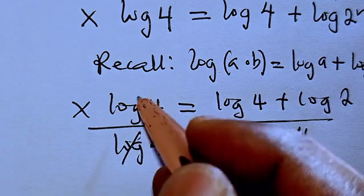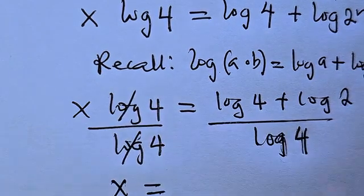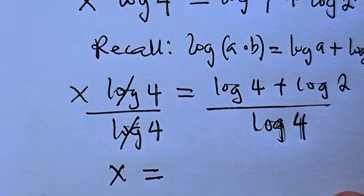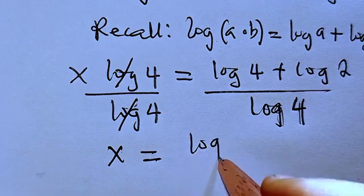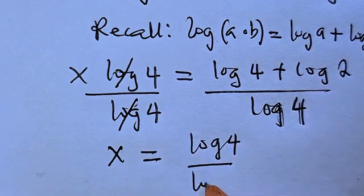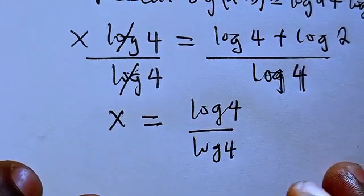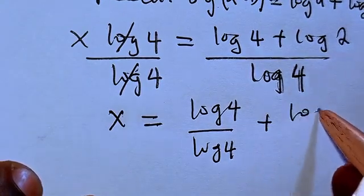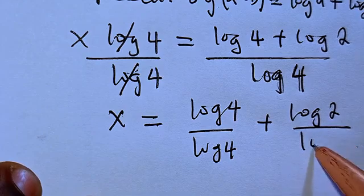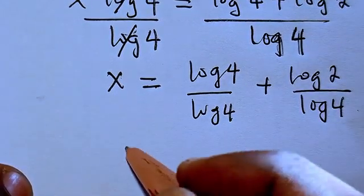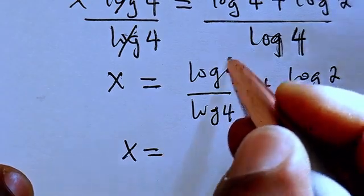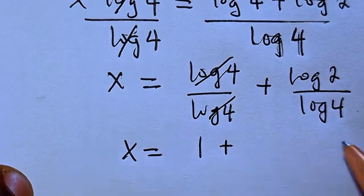So you know that this we cancel this. We have x equals. Now I can separate this into log 4 divided by log 4, plus log 2 divided by log 4. Then from here we have x equals, log 4 we cancel log 4, we have 1 plus.